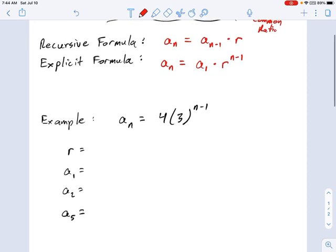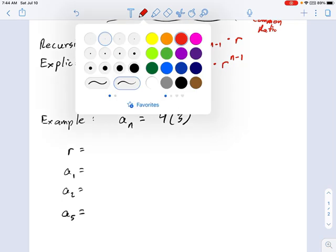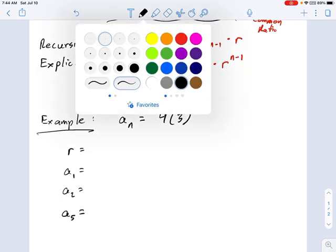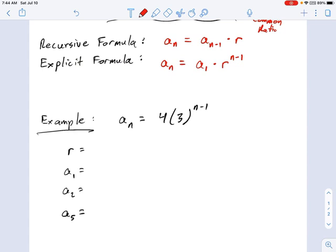We have this example here, and I'm going to say, if a_n, that's the explicit formula, or the formula for the nth term, if a_n equals 4 times 3 to the n minus 1, what's r, what's a_1, what's a_2, what's a_5?